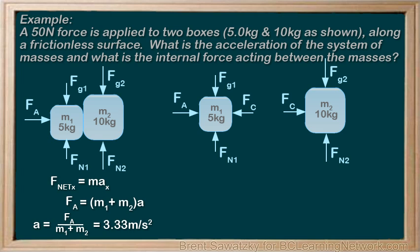Taking the next step, with the two individual free body diagrams, we start with Fnet equals MA, then substitute in our forces. FA minus Fc equals M1A and Fc equals M2A.